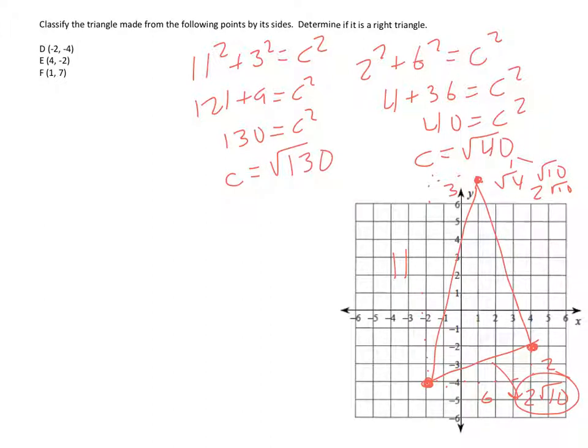So c equals the square root of 130. And this can't really be simplified much, because this would be 13 times the square root of 10, and that would be the square root of 5 and 2. So there's not going to be any good way to reduce this, so we're just going to leave this as the square root of 130. So that's this length.